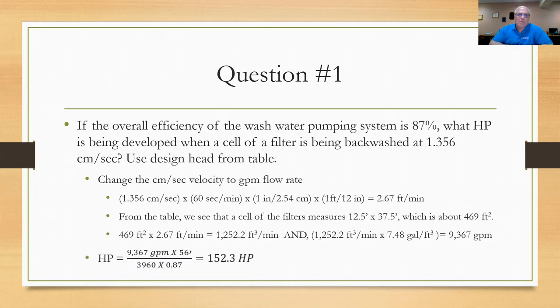So now I can work the horsepower problem. I'll go to the table if necessary and get the formula out, and it says multiply the gallons per minute, which was 9367, times the head, which I found from the table is 56 feet, divided by the 3960 and the efficiency, which was 87 percent according to the problem. And I come up with an answer of 152.3 horsepower. Hope you did well on that.